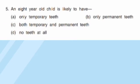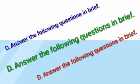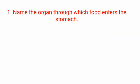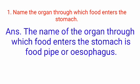Section D: answer the following questions in brief. Question one: name the organ through which food enters the stomach. Answer: the name of the organ through which food enters the stomach is the food pipe, also known as the esophagus.